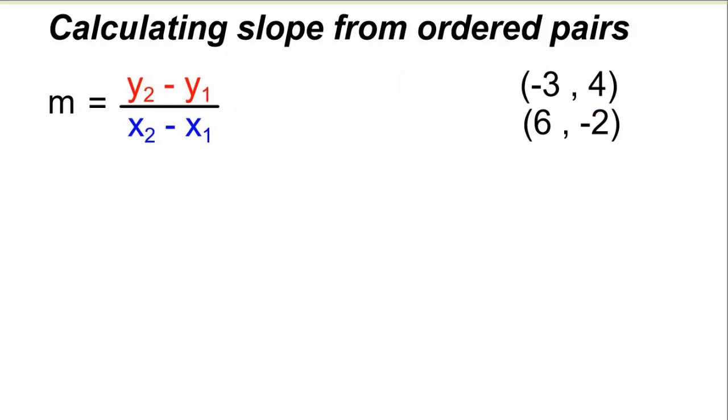For those of you that really understand rise and run, there is a shortcut to this and this works for slope every time. And if you see these two points over here, how they're stacked up, I put a line underneath them and I put a minus outside.